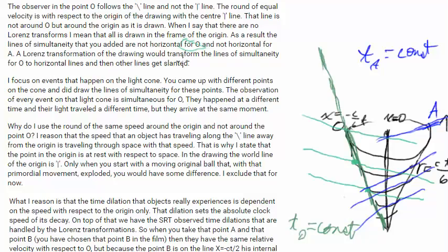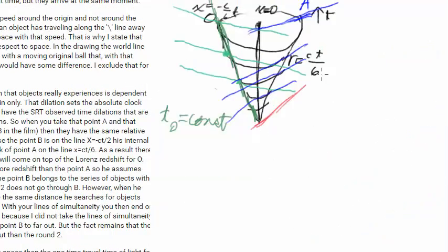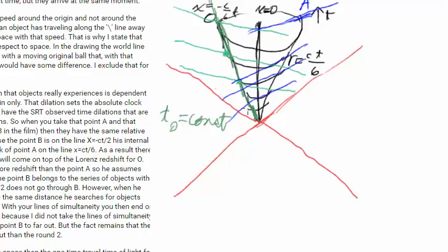A Lorentz transformation of the drawing would transform the lines of simultaneity for O to horizontal lines, and then other lines get slanted. That's correct. If I did a Lorentz transformation of this, I could do it around this point — let me add a new layer here and imagine the light cones coming from what would be kind of in our description the Big Bang event. This point is going to be moved along a hyperbola, this point along a hyperbola this way, this point along a hyperbola this way.